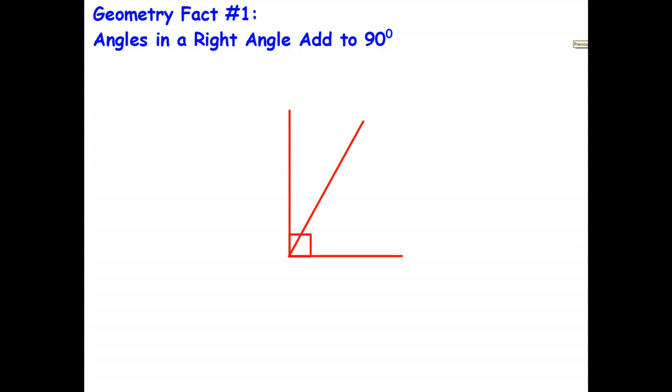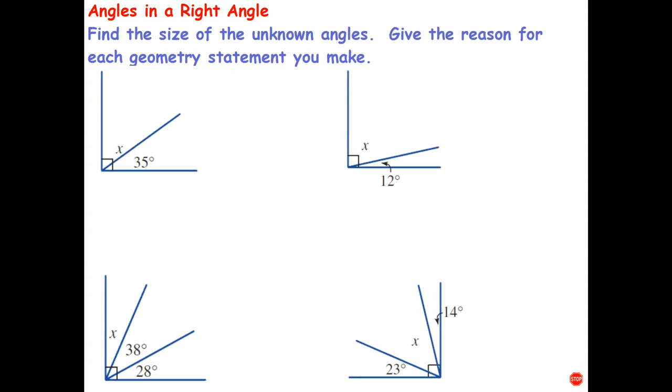Okay, now the first geometry fact is pretty straightforward. If I have a right angle, such as this one, and it's divided into two or more angles, all the first geometry fact says is these angles must add up to 90 degrees. So let's have a look at how we might do a question involving that.